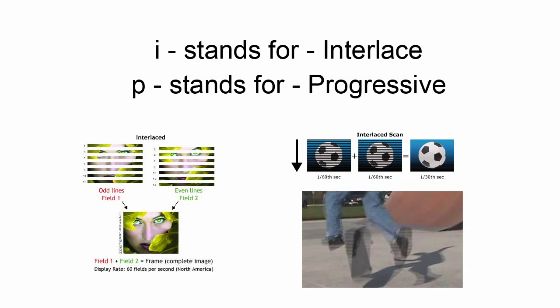Progressive images, on the other hand, display the image all at once. The downside to this is that it takes a lot of memory and a lot of processing power for the cameras and the televisions to display progressive images.